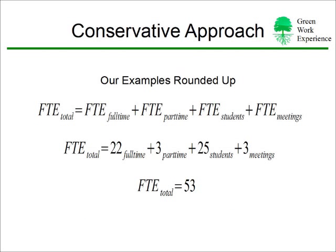Remember to always take the conservative approach in calculating FTEs. For our examples, we round up each of the individual values we calculated to receive our total FTE. We had full-time, part-time, students, and meetings, and this results in a total FTE value of 53 for our building.